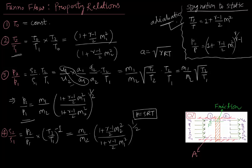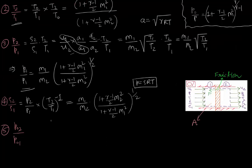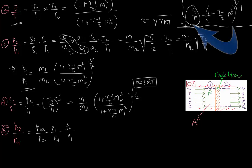Next, we will consider stagnation pressure ratio P02 by P01. We have already derived the static pressure ratio, and we know the relation between stagnation pressure and static pressure. Hence, we can write P02 by P01 by multiplying and dividing by P1 and P2. We already know the ratio of stagnation pressure P0 by P from the stagnation-to-static relation.